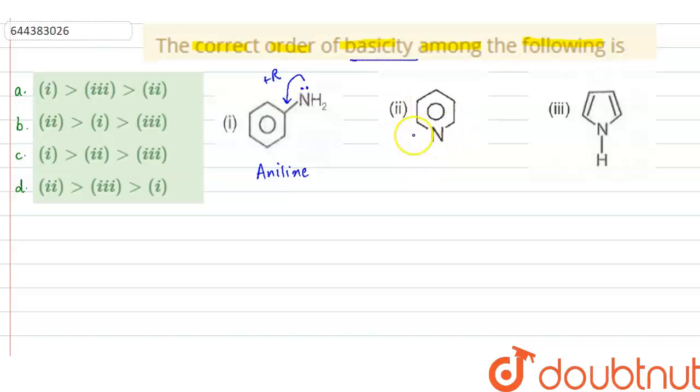Now, if we look at the second molecule, here also we have a ring and here we have nitrogen which has a lone pair.